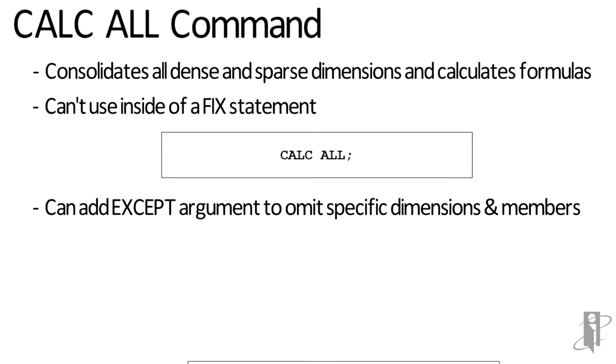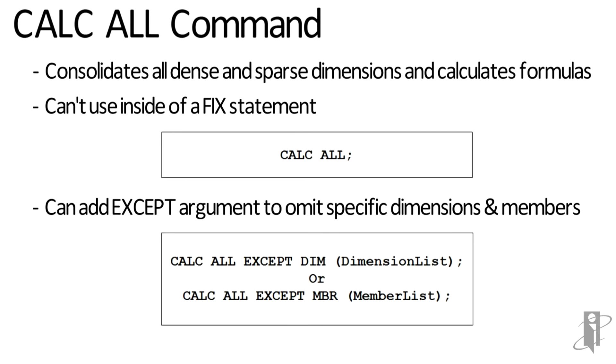There is an optional argument. We can tell it that we want to omit certain dimensions or certain members by saying CALC ALL EXCEPT and then either DIM or MBR. Let me explain.